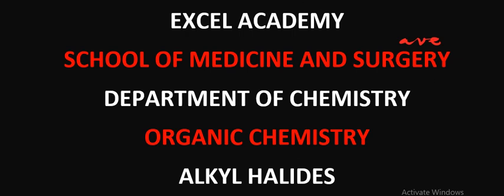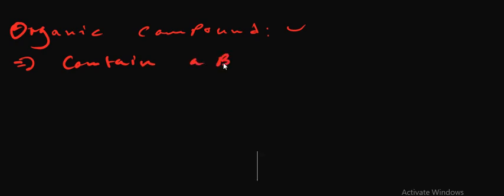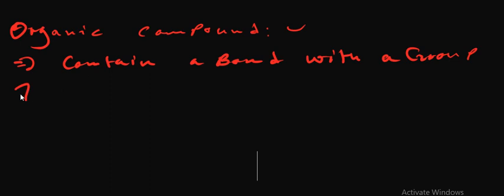Hello guys, this is Dr. Possibility from Excel Academy. In today's class I'm going to explain alkyl halides. Alkyl halides are organic compounds — that's the first thing you need to take note of. These organic compounds contain a bond with a Group 7 element.